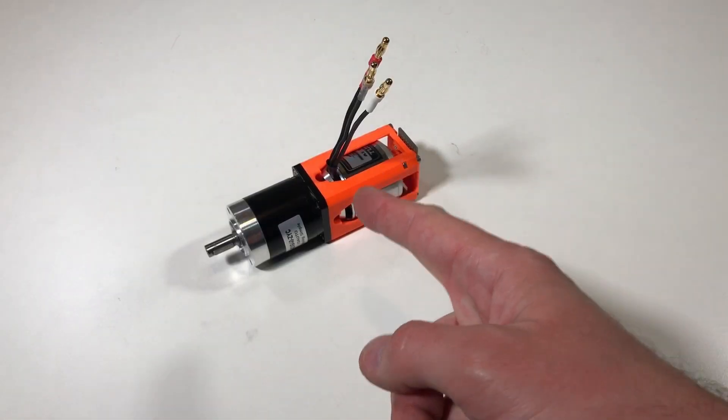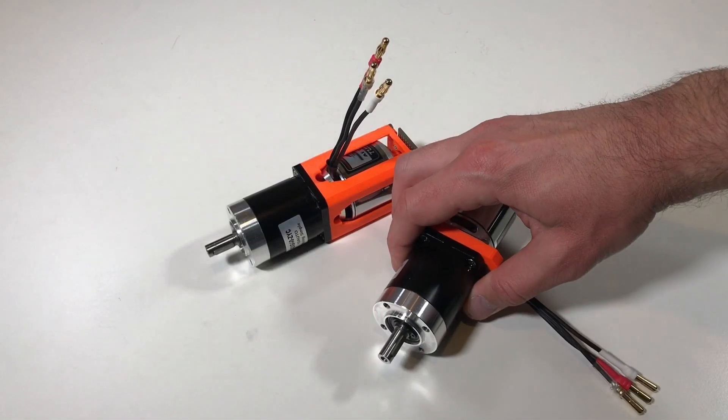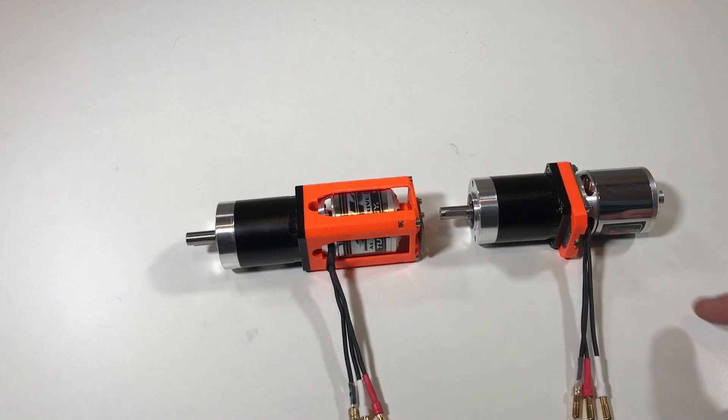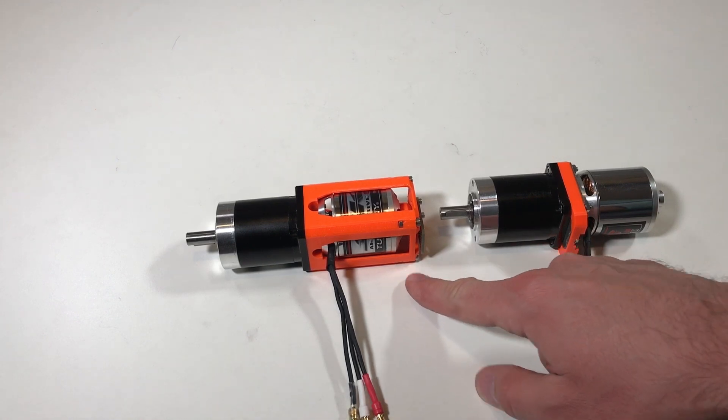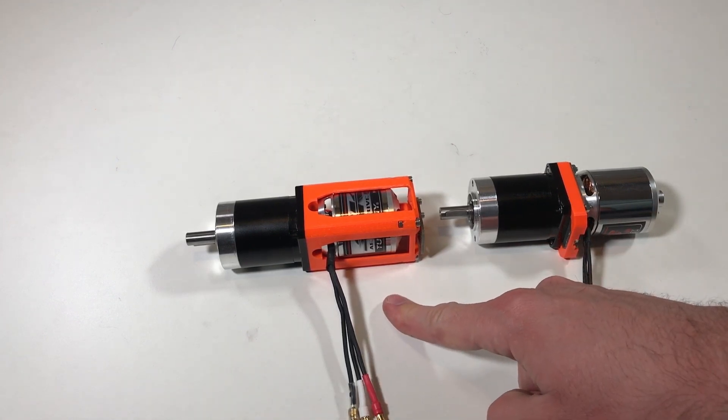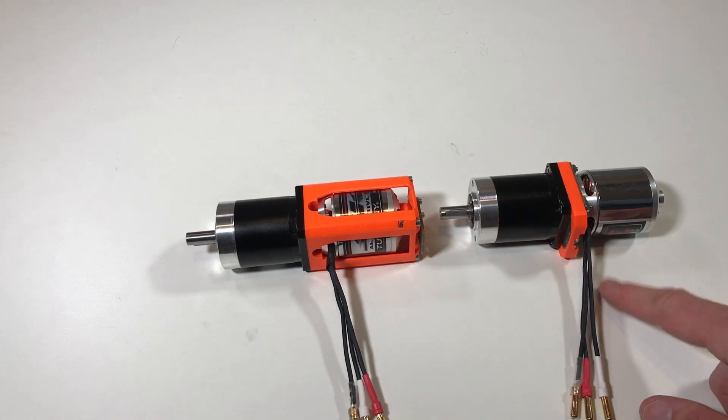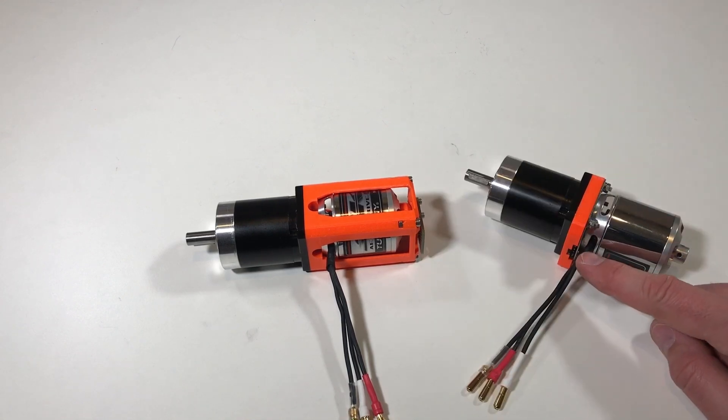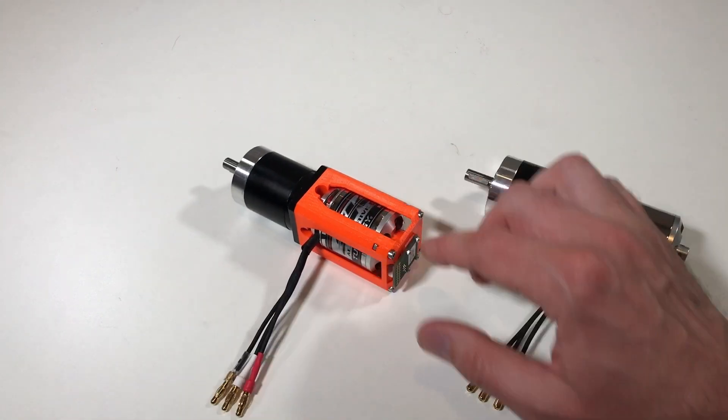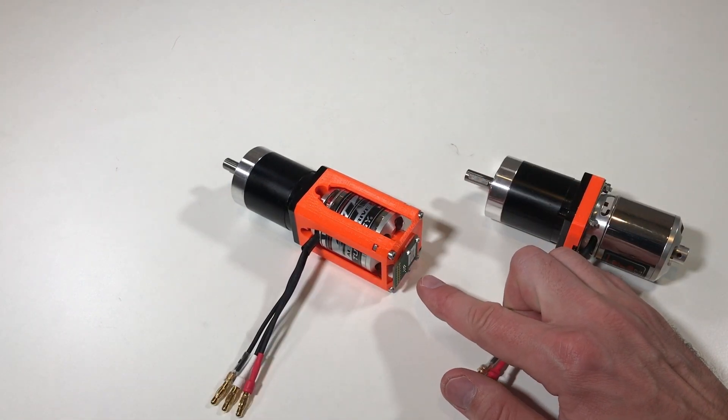This reducer has a reduction ratio of 40. And basically we need to connect the encoder and we can test it. Just for comparison, this is today's assembly and this is last week's assembly. You see that last week's is maybe a little bit more compact because there is no this part. But this one is easier to assemble because you don't need to machine a metal piece like for this one. Here I used the AMT-102 encoder. And here I used the magnetic encoder AS5047P.